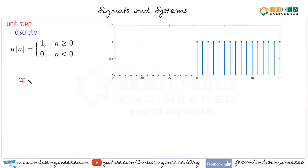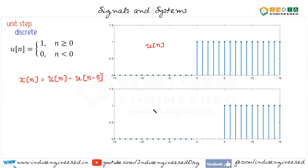Let's say we have x(n) which is equal to u(n) minus u(n-5). Here we have u(n) and this is u(n-5). Now all we need to do is take the difference.